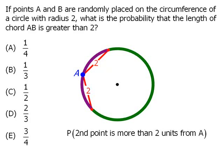So we can rewrite our question as: what is the probability that our second point lies on the green arc? To answer this question, we need to know what portion of the entire circle is represented by the green arc.